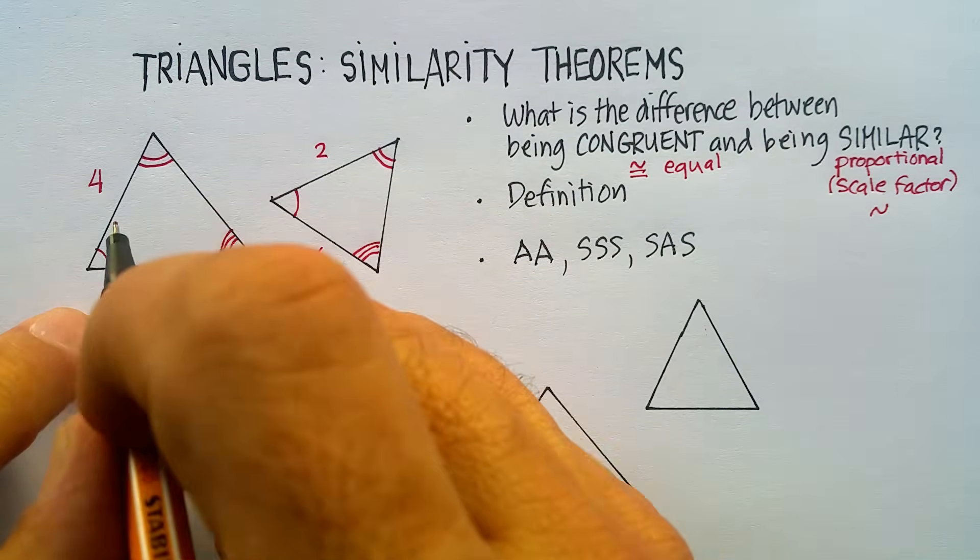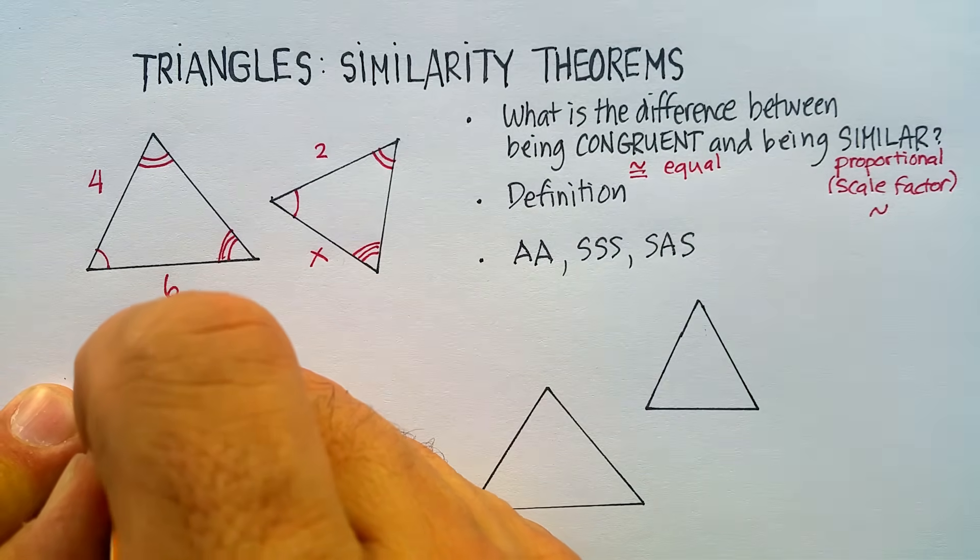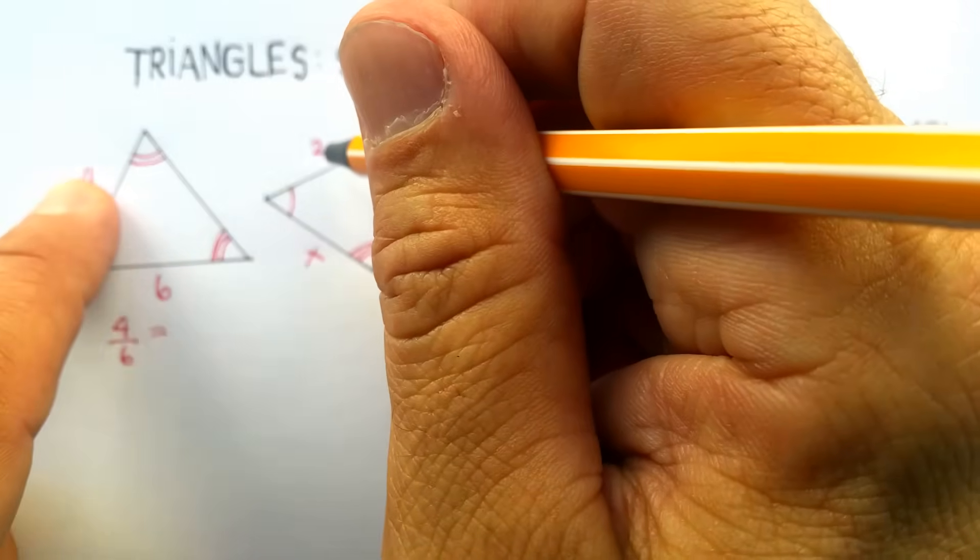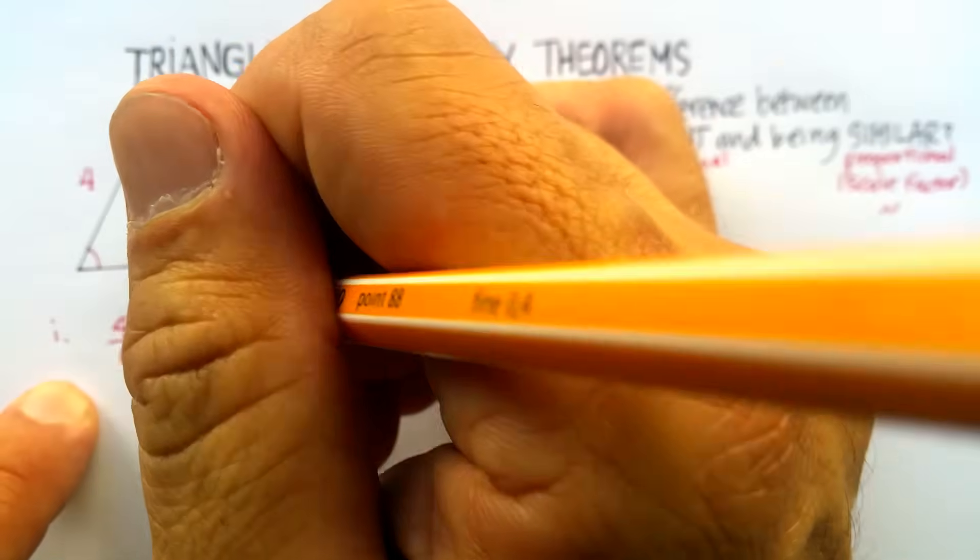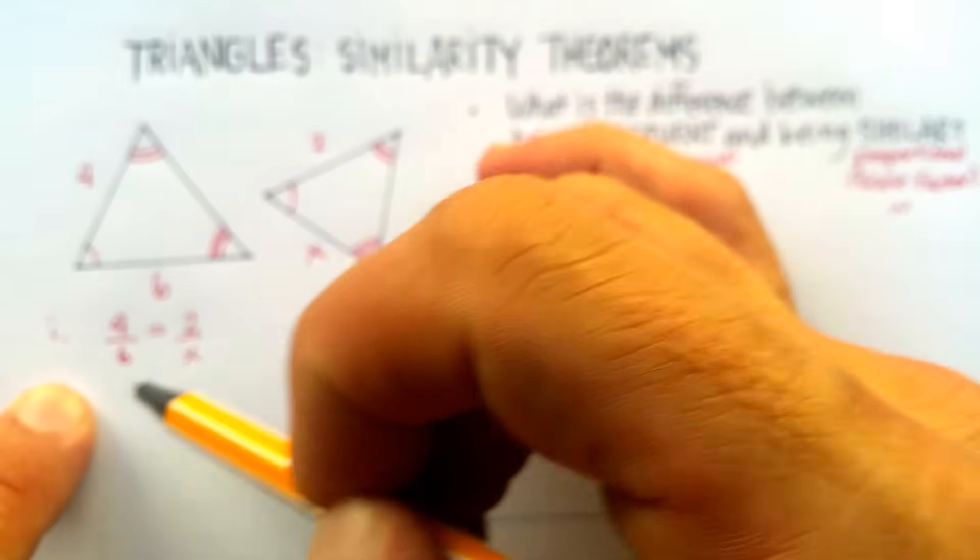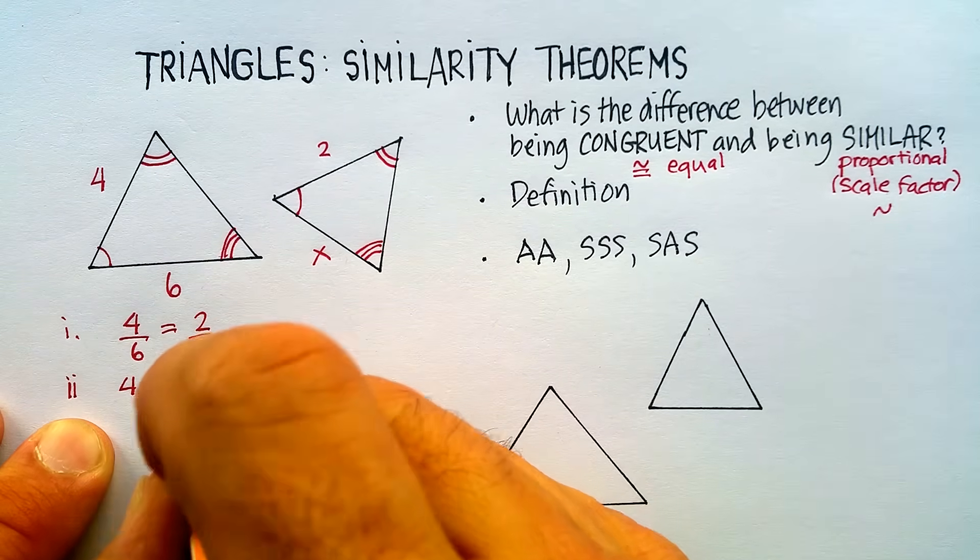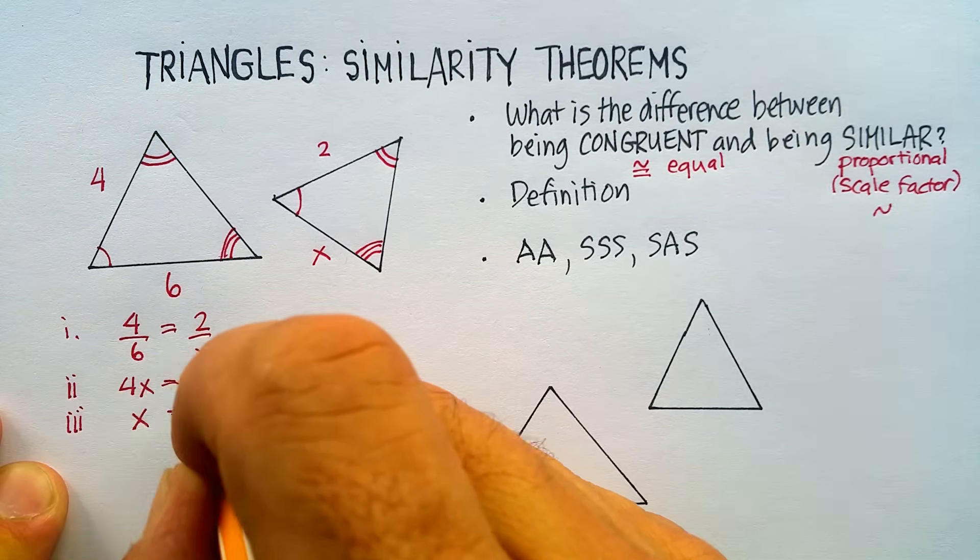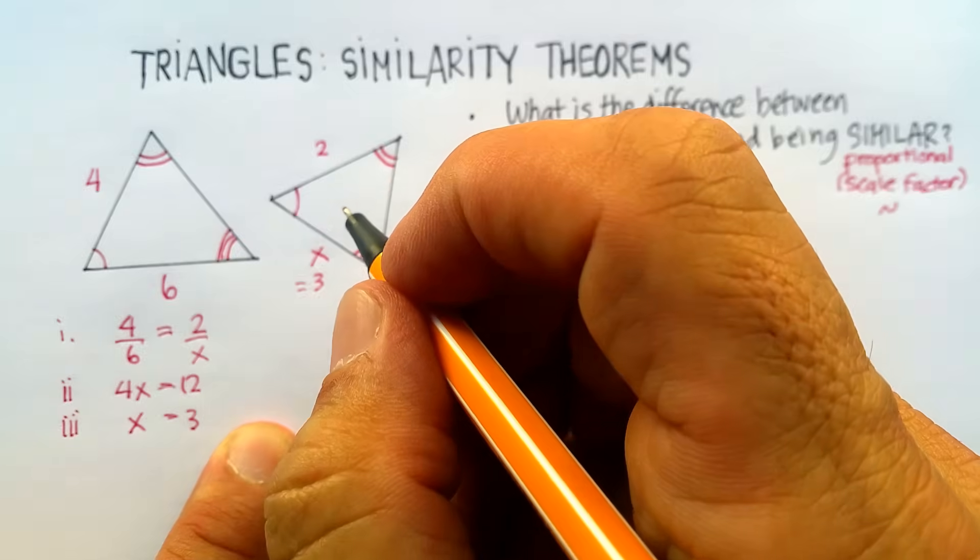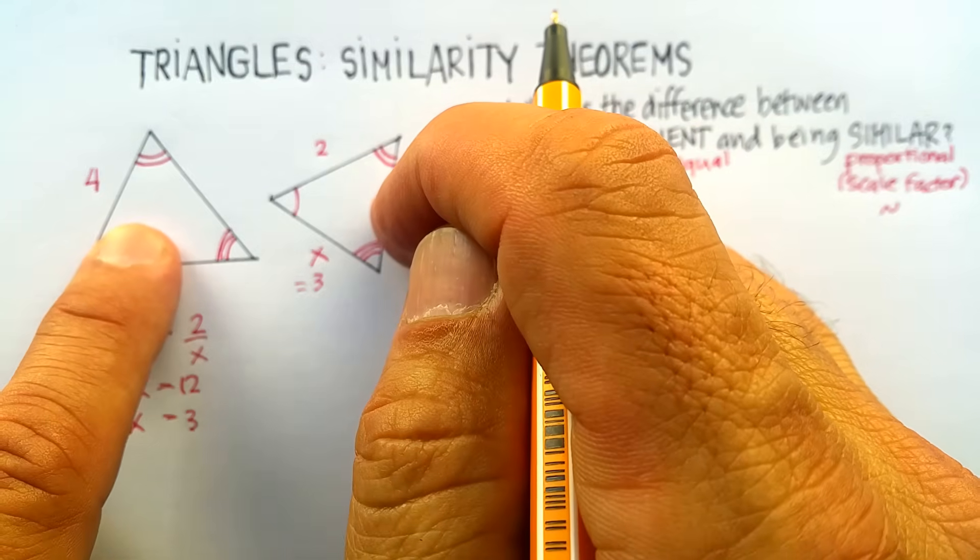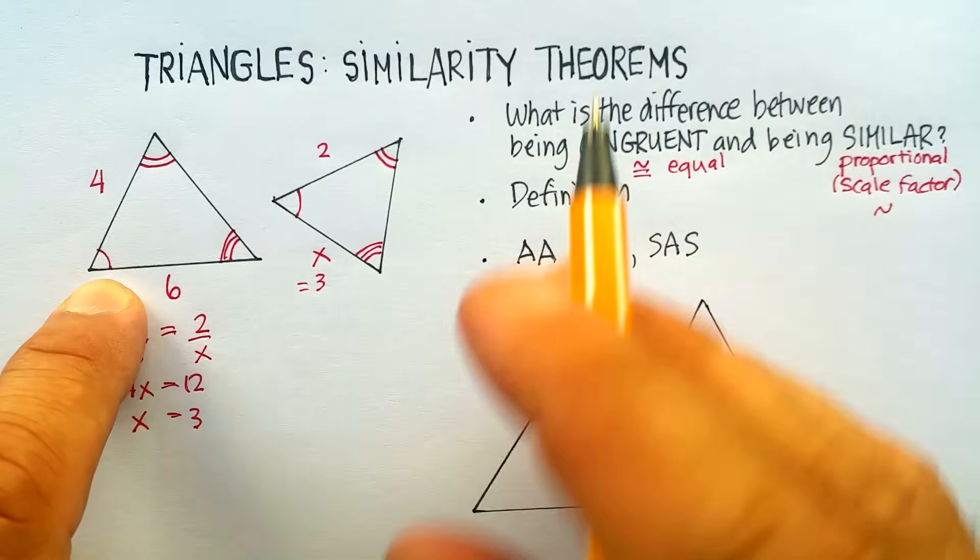For example, in this first one, I could say this side 4 is to this side 6 corresponding. So 4 is to 6 as 2, because this corresponds to the 4, is to the x. So if 4 is to 6 as 2 is to x, that means that they're proportional. I can simply cross-multiply or do the cross-products rule. And I would get 4x is equal to 12 or x is equal to 12 divided by 4, which is just 3. That means that this side x is equal to 3. I'm able to figure out that missing side by using the proportionality between the two similar triangles. And I know that these triangles are similar because two of the angles are exactly the same.